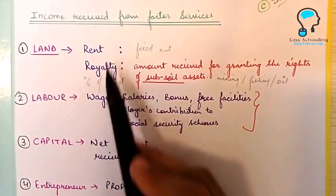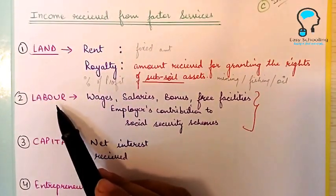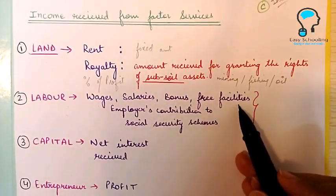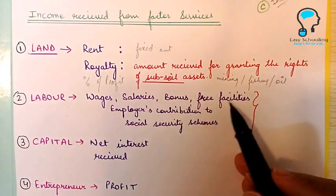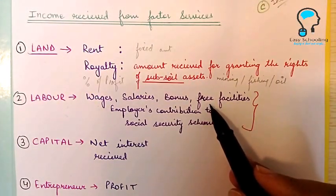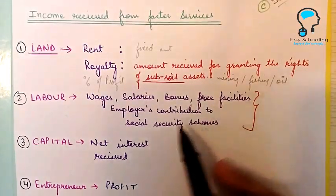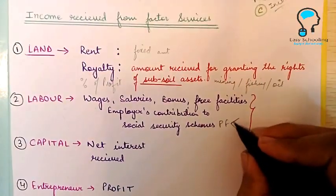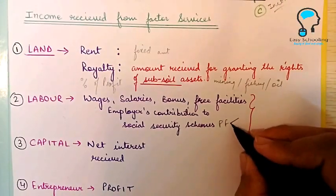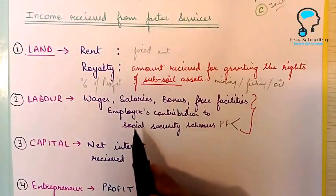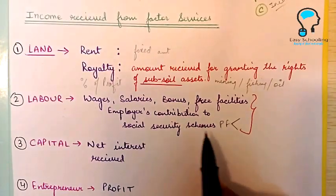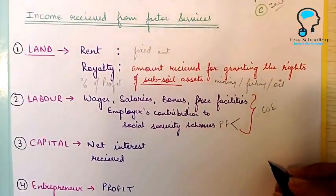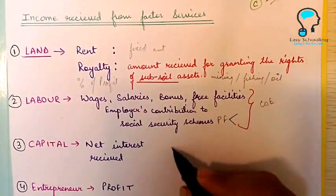The remuneration for labor includes wages, salaries, bonus, and free facilities such as housing, payment for petrol, or mobile bills. Employers also contribute to social security schemes like PF — part of the contribution is made by the labor and part by the employer. So the employer's contribution to social security schemes is also a form of remuneration. All of this together is called compensation of employees.